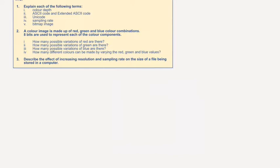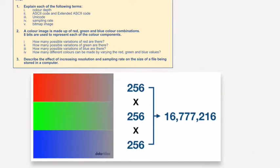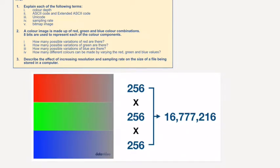If I move to part two, a color image is made up of red, green, and blue color combinations. Eight bits are used to represent each of the color combinations. Well, again, I'm going to use a diagram. So here we go. Now, if it's eight bit, how many variations of red can we have? Well, we can have 256. How many variations of green in terms of eight bit? Obviously, again, 256, and blue, the same, 256.